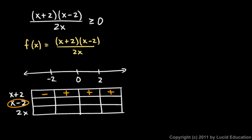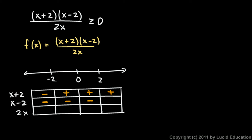Now let's think about x minus 2. If you have an x value less than negative 2, then x minus 2 will be negative. If your x value is less than 0, x minus 2 will be negative. In fact, if your x value is anywhere up to 2, x minus 2 is still negative. But if you have x values greater than 2, then x minus 2 is positive.